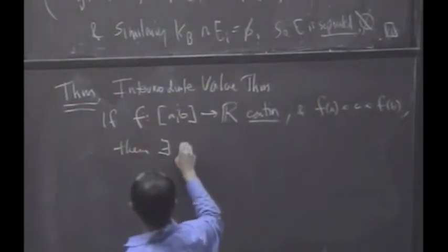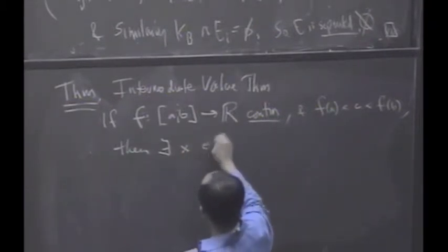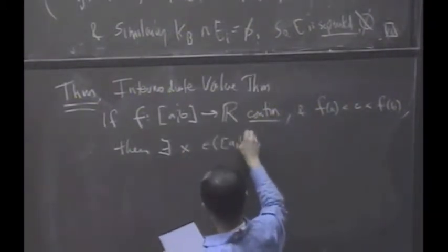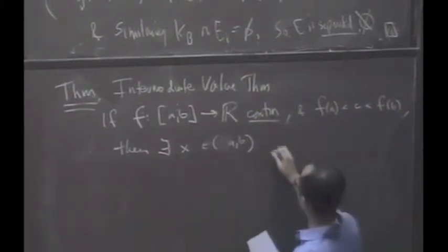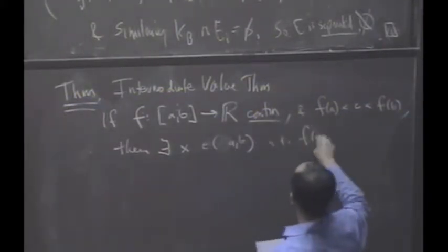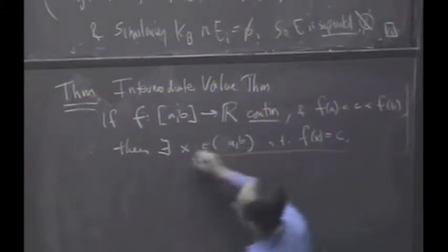Then I claim there exists an X in (A,B), in open (A,B), in fact, such that F(X) equals C. That's the Intermediate Value Theorem.